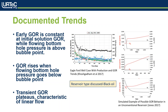I'll first start with the fundamentals of documented trends — well-known trends in the industry — and I've broken this down into three parts. Your early GOR is constant at initial solution GOR while the flowing bottom hole pressure is above bubble point; your GOR rises when the flowing BHP goes below bubble point; and your transient GOR plateaus, which is characteristic of linear flow. One study from Koshkadam shows the flattening of flowing bottom hole pressure and GOR because this BHP has not reached below bubble point. Some of these plots come from numerical simulations where GOR strongly depends on flowing bottom hole pressure, and most of this has been covered by a study from Newfield.